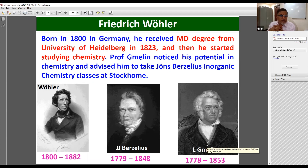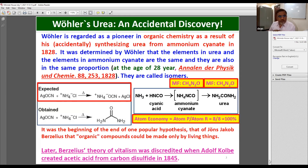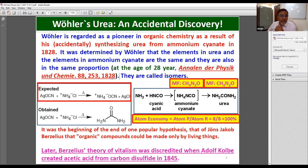What does vitalism mean? According to the belief at that time, organic compounds can be synthesized only in a living system — a plant or animal — they cannot be synthesized in the lab. What happened during that time was that Wöhler started working with Berzelius and accidentally synthesized urea from ammonium cyanide. He was 28 years old at that time.